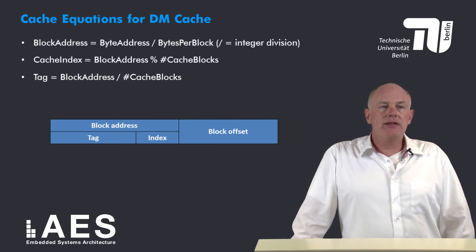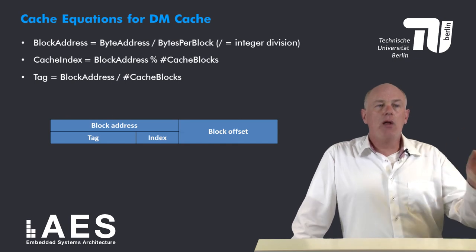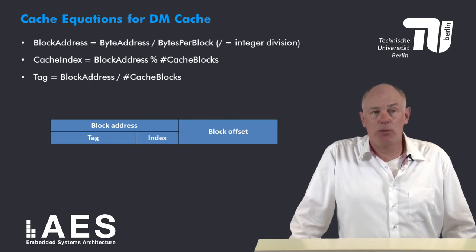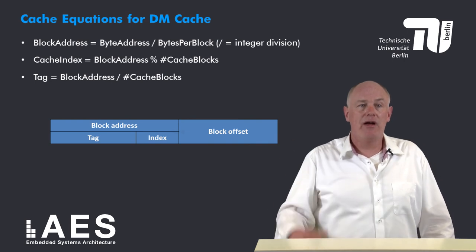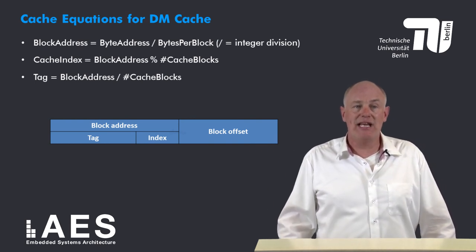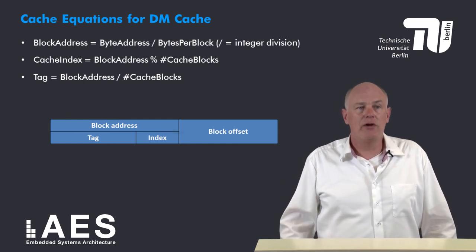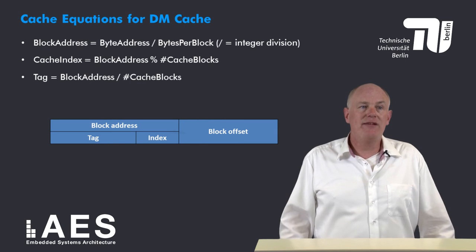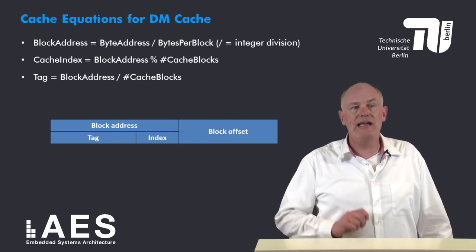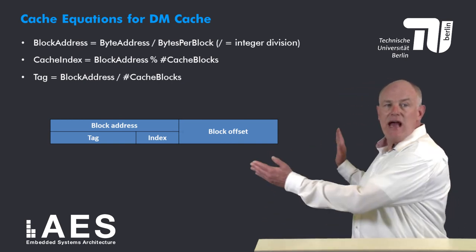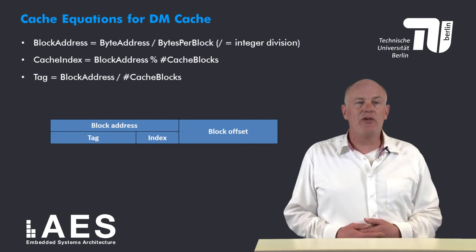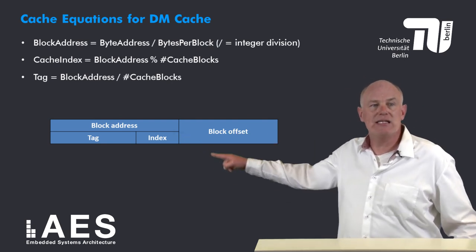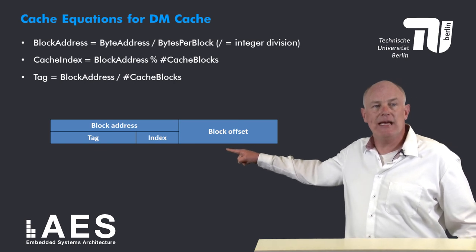This slide summarizes the equations for a direct map cache. The block address equals the byte address divided by the bytes per block (integer division). The cache index equals the block address modulo the number of cache blocks, and the tag equals the block address integer-divided by the number of cache blocks. Every address is thus divided into parts: the least significant bits are the block offset, and the most significant bits form the block address, which itself is split into index and tag.